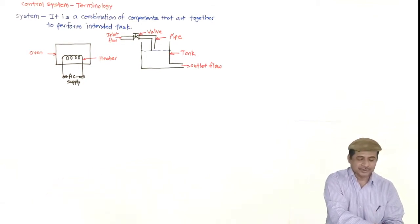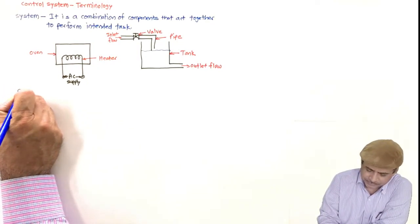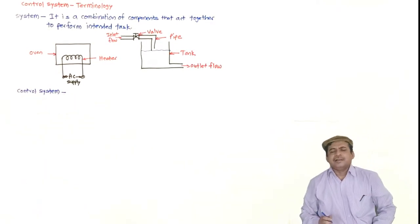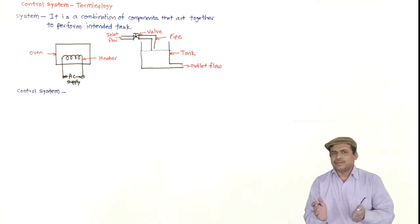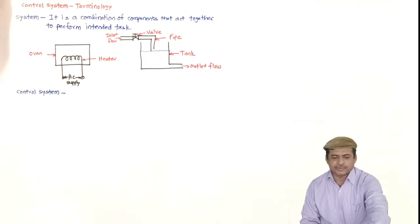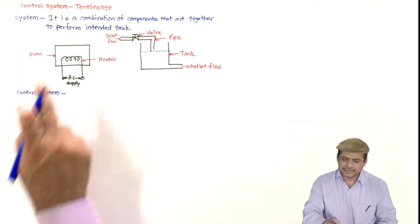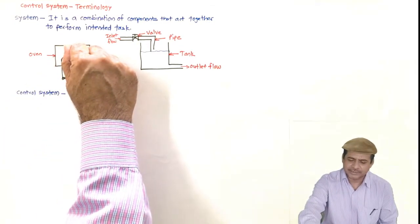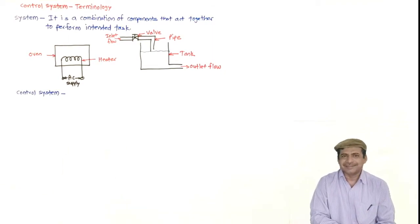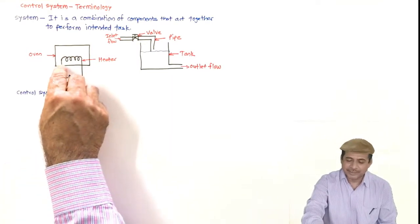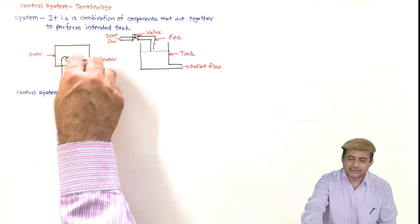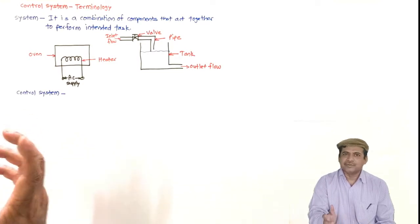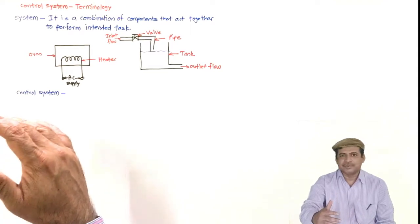Now, what is a control system? A control system is a type of system where the word 'control' is coupled with 'system,' meaning there has to be control of something we want. For example, revisiting the same two systems — if we want to maintain the temperature inside the oven at, say, 100 degrees centigrade, we can do so by providing variable current through the heater coil. The energy or power dissipated will be different, and that will keep the temperature at the desired value.